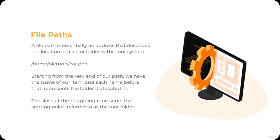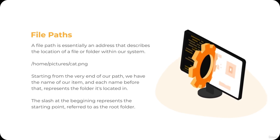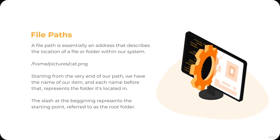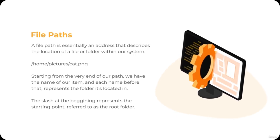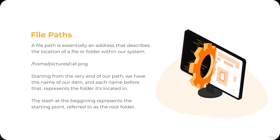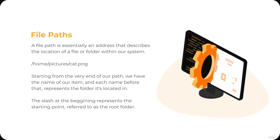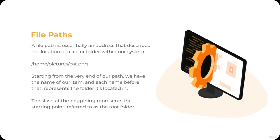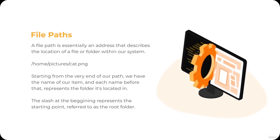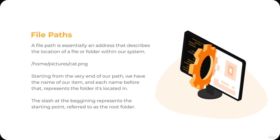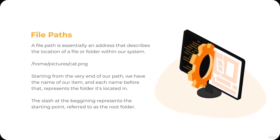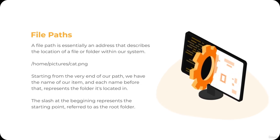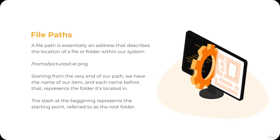This base, or starting point, is referred to as the root folder — think of it as the main folder that contains all the other folders in our system. It's called the root folder because it metaphorically resembles the base of a tree, from which all branches, or folders, stem. In a path, the root folder is represented by a single slash at the very beginning. In our example, this indicates that the home folder is nested within the root folder.